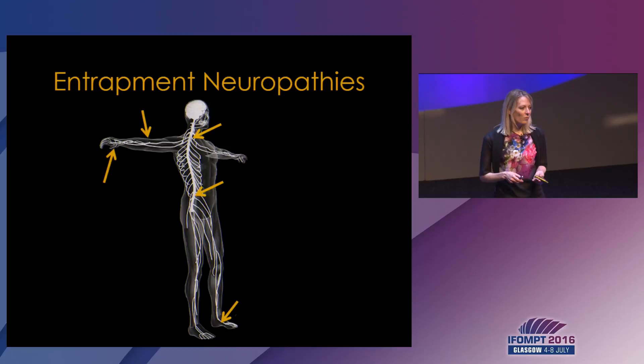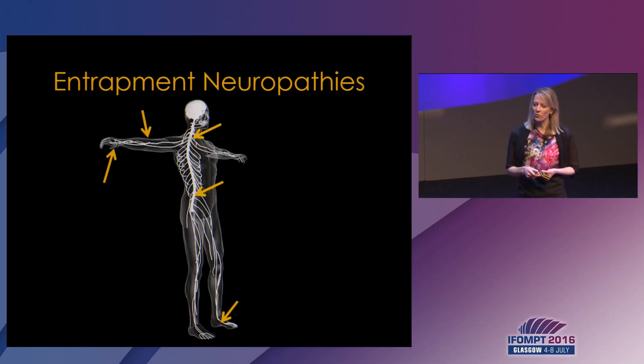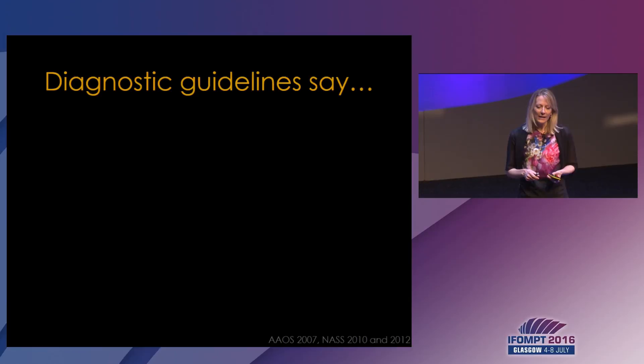Common entrapment neuropathies are certainly carpal tunnel syndrome, cubital tunnel syndrome, and cervical or lumbar radiculopathies, but there are also somewhat more controversial entrapment neuropathies such as Morton's neuroma, piriformis syndrome, or tarsal tunnel syndrome.